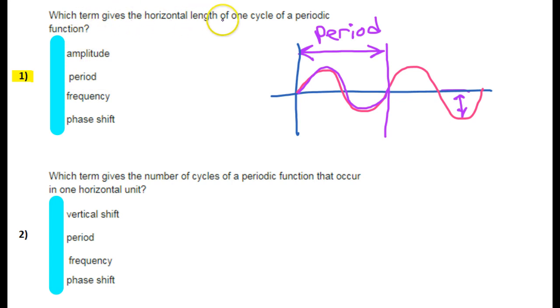Which term gives the horizontal length of one cycle of a periodic function? Well, that's the period. So I'm claiming that this is the answer. Let's go ahead and check it. Alright, checkmark means we're right. Let's follow through and talk about these other two things.